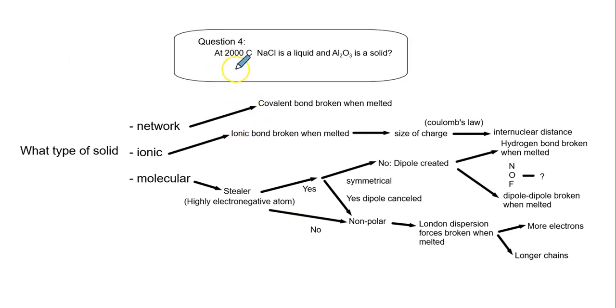Question four: at 2000, NaCl is liquid but aluminum oxide is not. They're both ionic, they both break ionic bonds. The one difference here would be the size of charge. NaCl is plus one minus one, aluminum oxide is plus three minus two. Larger charges means larger melting point.